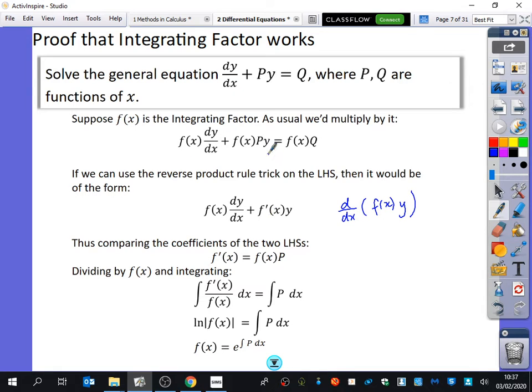Now, by comparing these things that we've got here, we can see that this thing and this thing are equal to each other, but the y's we can ignore. So we get that f'(x) from this one is equal to f(x)p. When we rearrange this by dividing by f(x) and integrate, we get that f'(x) over f(x) integrates to ln of f(x). Why does it integrate to ln of f(x)? Because that's the derivative of the denominator. So it's a reverse chain rule there. And then the other side is just the integral of p with respect to x. And then you rearrange it with an ln by saying that f(x) is e to the integral of p with respect to x. So it works, okay? This is why the integrating factor works.